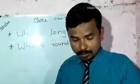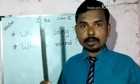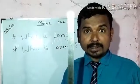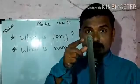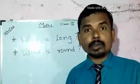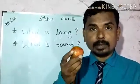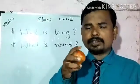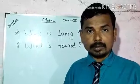Now guess what I'm going to take out. A scale — we draw lines with it. This is long. Now guess what I'm going to take out. An eraser — this is also round. You see here.